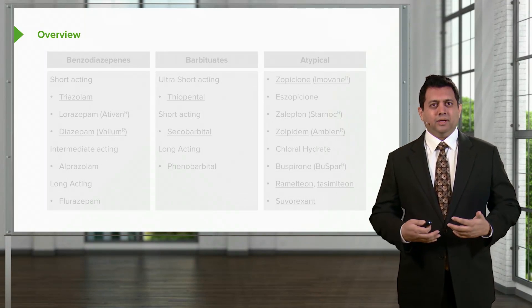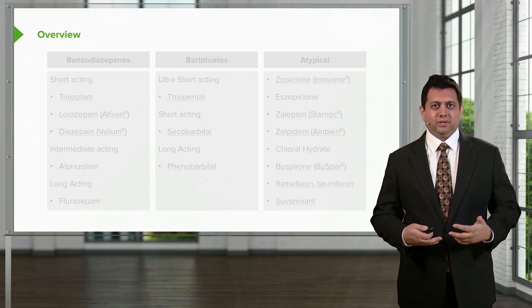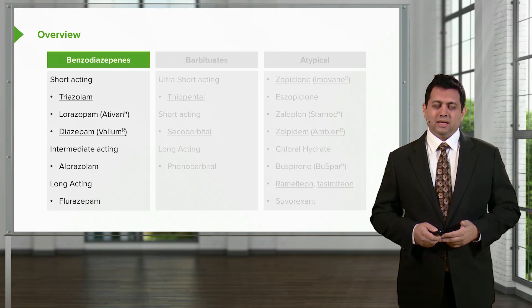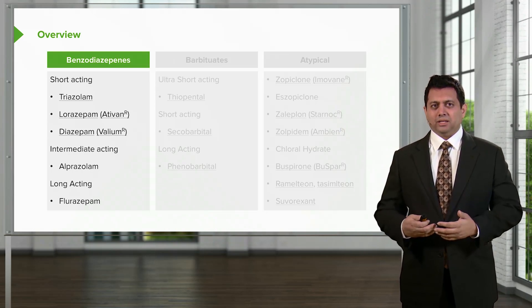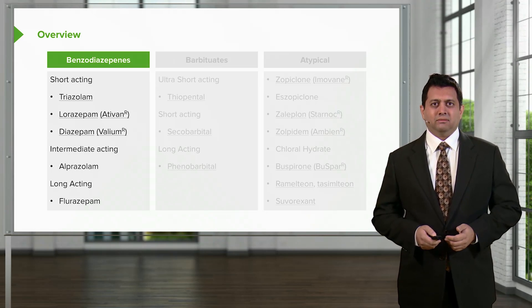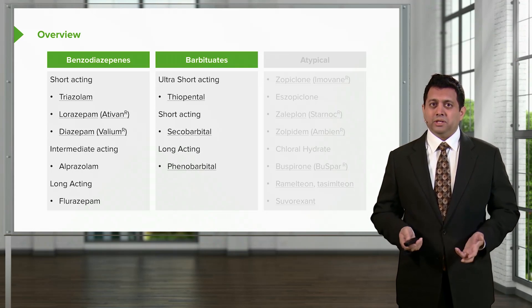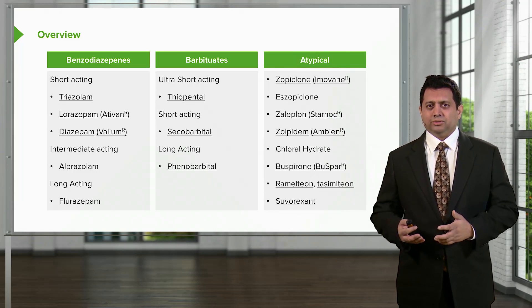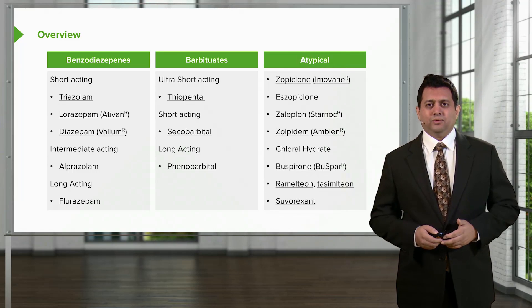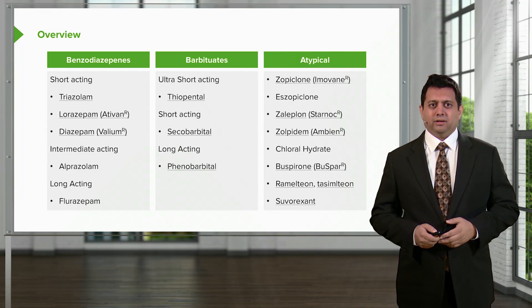Here is an overview of the medications that we're going to be covering in this section of the lectures. We have benzodiazepines which are probably the most commonly used of the sedative drugs out there. We also have barbiturates which are commonly more used in anesthesia and we have atypical drugs that can be used in various forms and in various clinical scenarios.